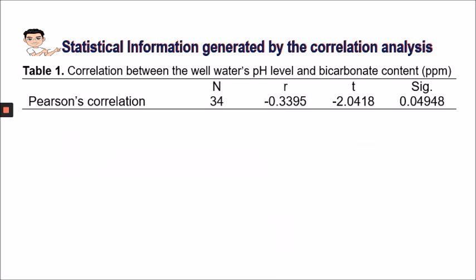The last information from this table that we need to interpret is the t-value or the p-value. In this example, I'll be using the p-value, which we are going to compare to 0.05. The rule of thumb is if the p-value is less than 0.05, then there is a significant relationship between the pH level and the bicarbonate content.